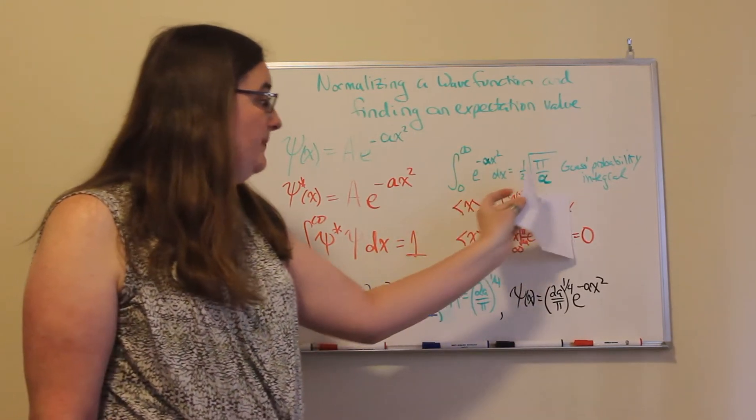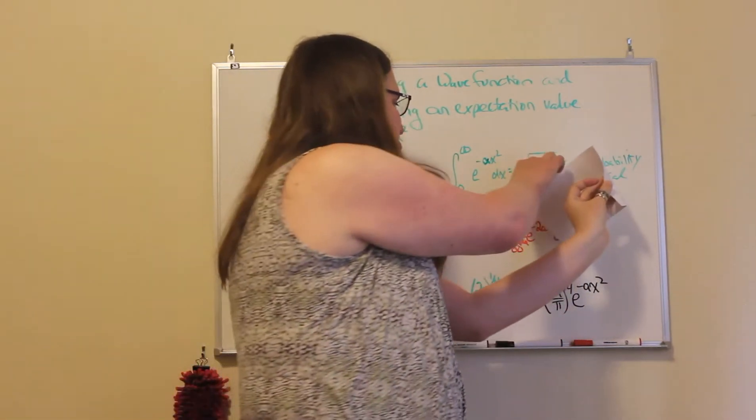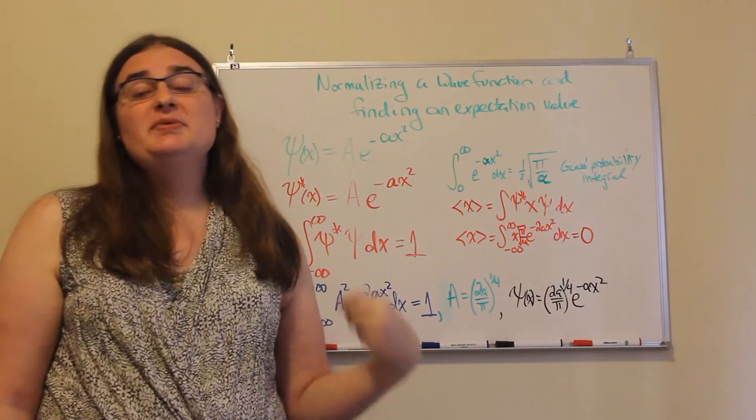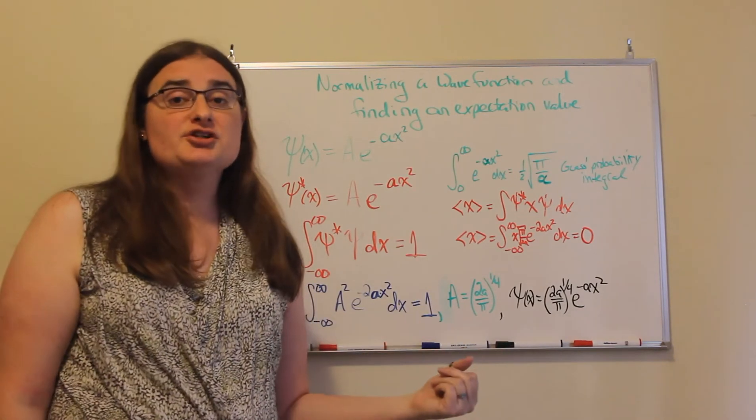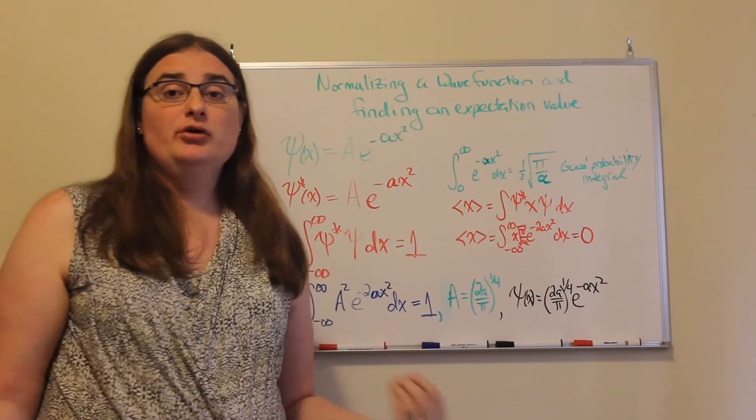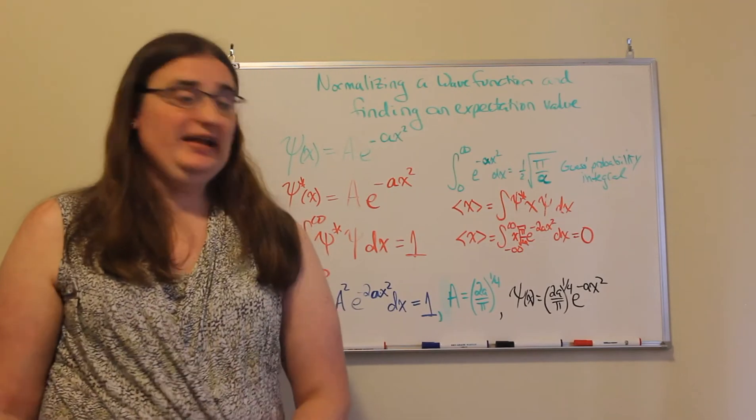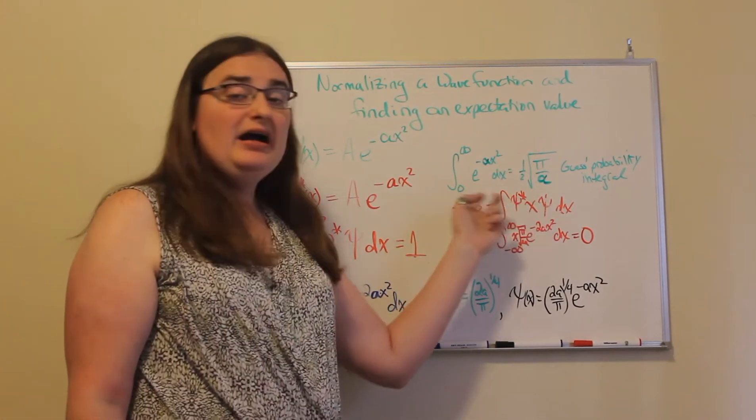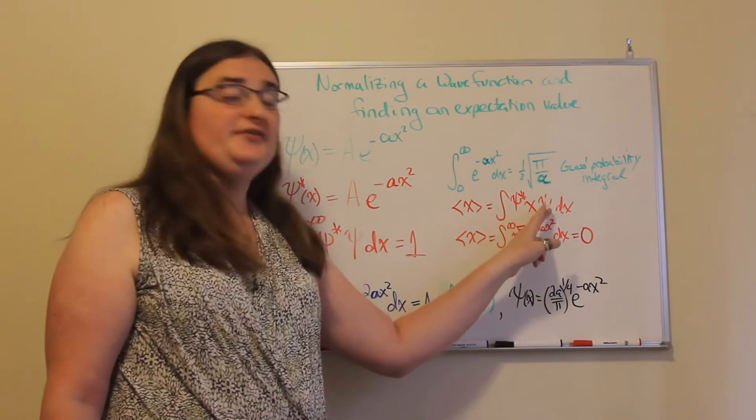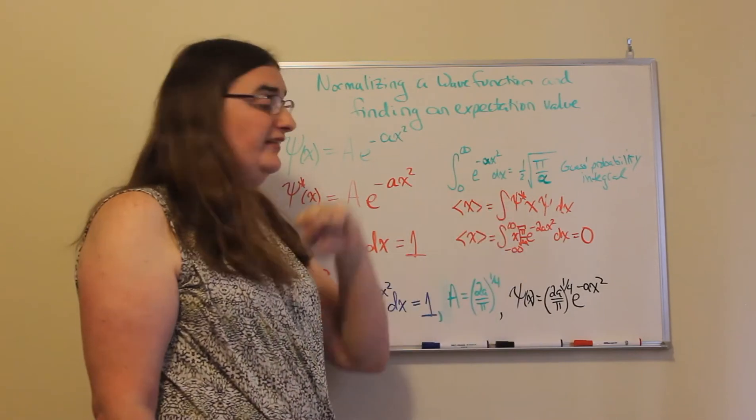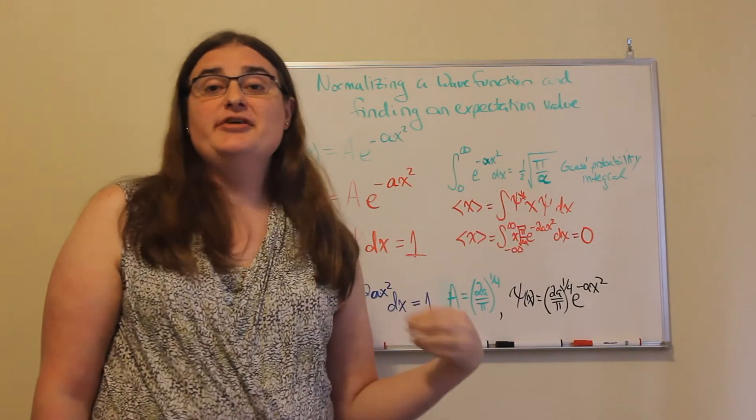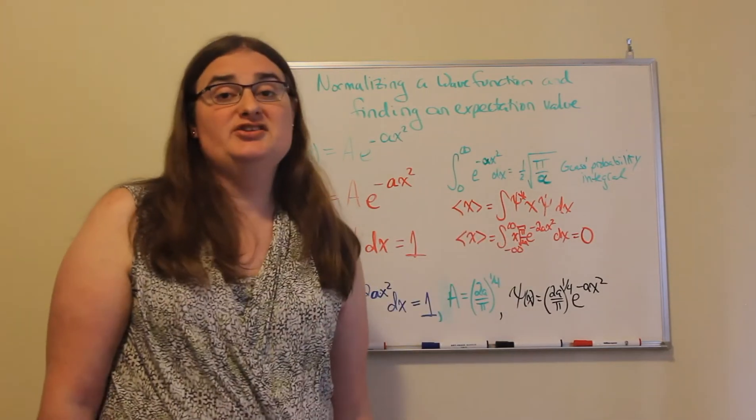Well, an expectation is just a really fancy way of saying we're going to be calculating an average. And the way that you calculate averages or expectations in quantum mechanics is you would take either side of our probability wave, either the probability wave itself and the complex conjugate, and you would sandwich whatever it is you're averaging in between the two.